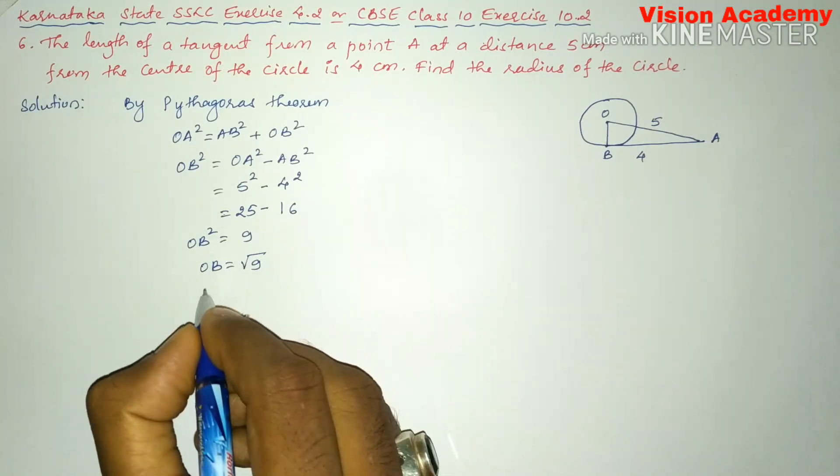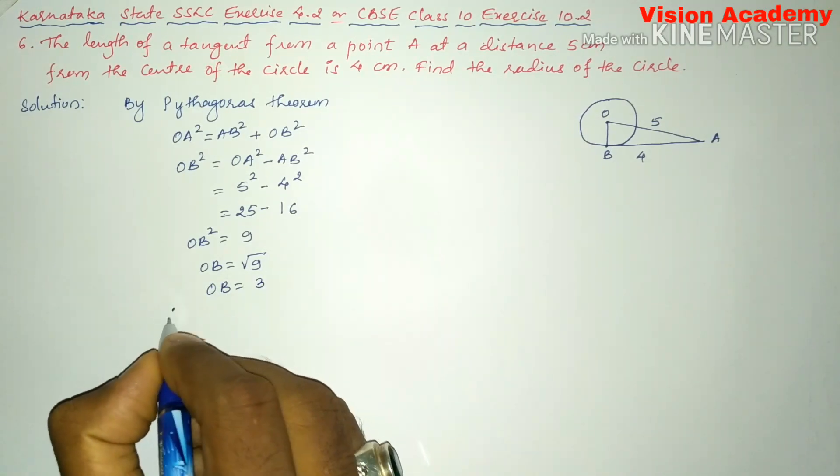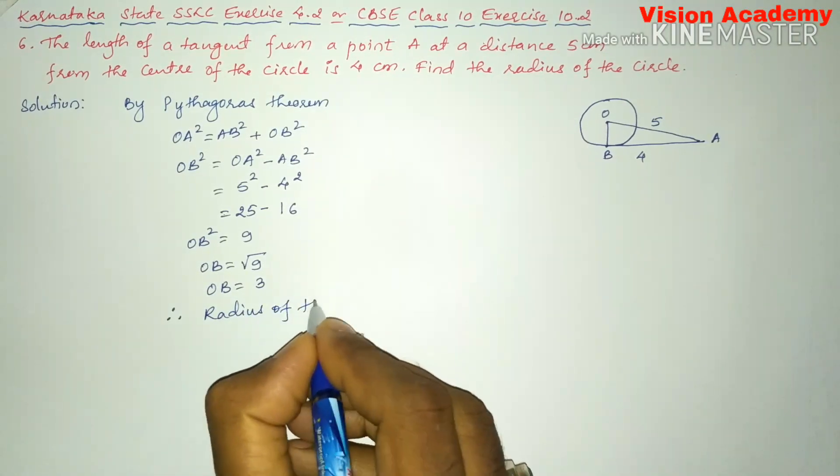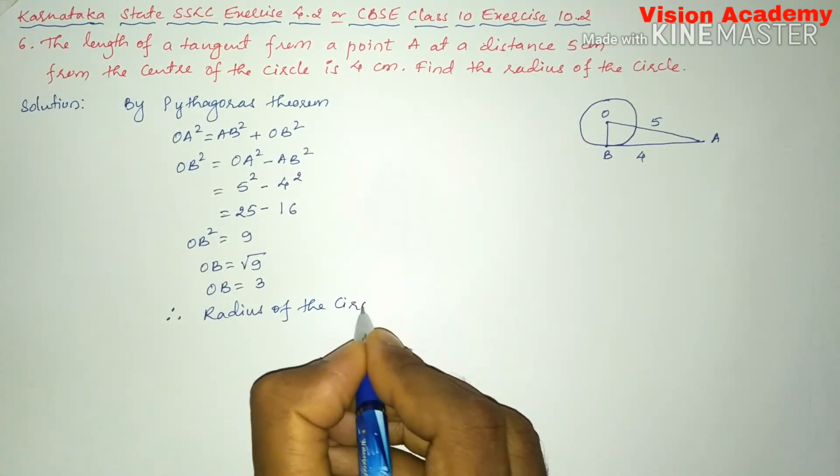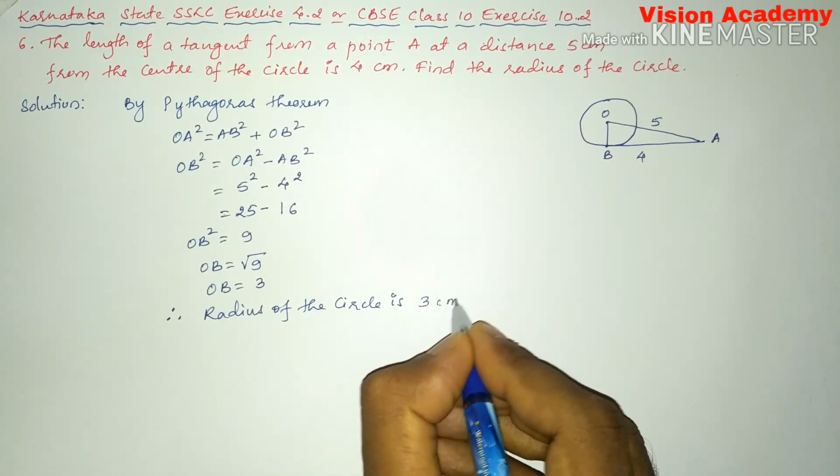So, 9 is a perfect square of 3. So, OB is equal to 3. Therefore, we can say radius of this circle is 3 centimeter.